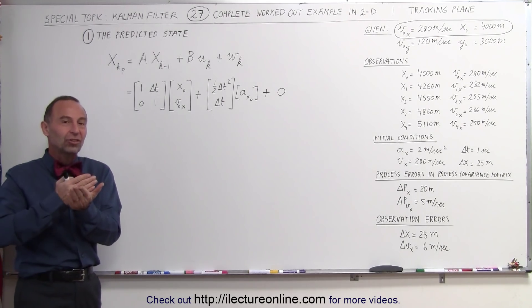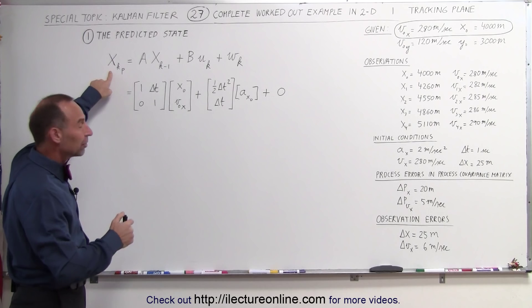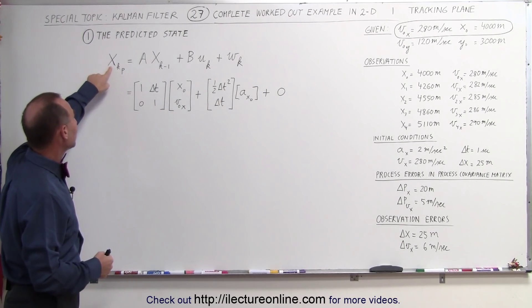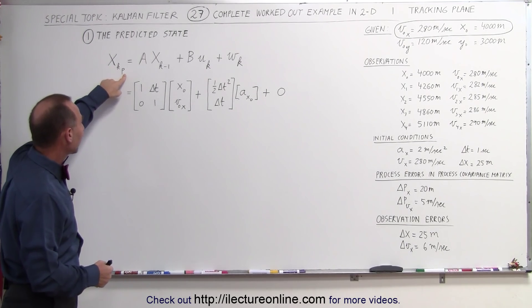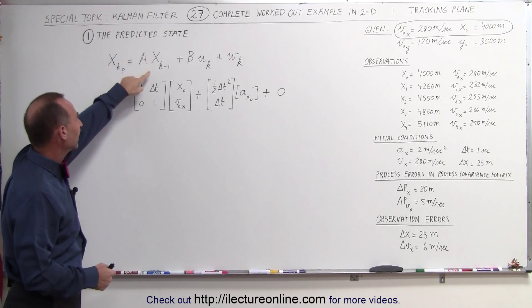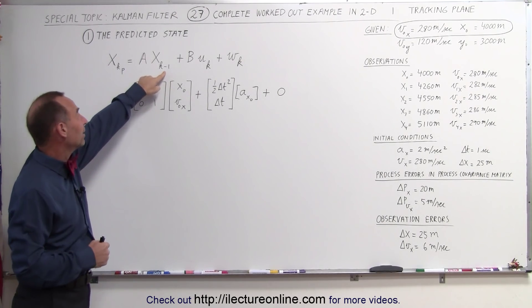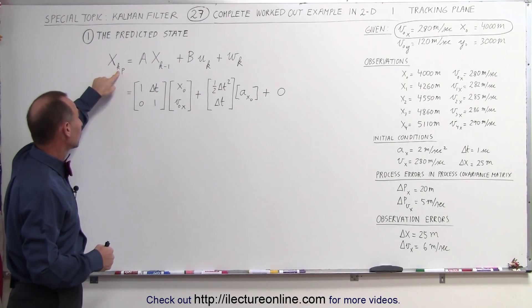So we had the initial state, now we need to predict the future state. So that's going to be the state as predicted, that's what the p here stands for, and that's going to be based on the previous state k-1, so predicting the current state k.